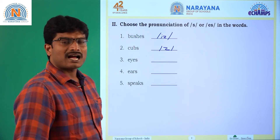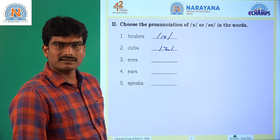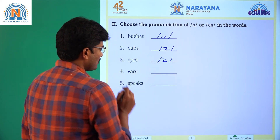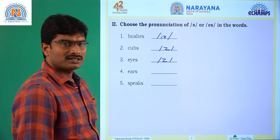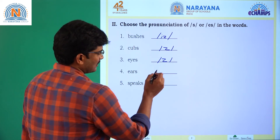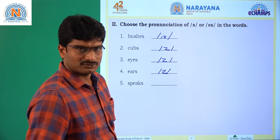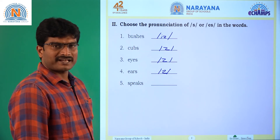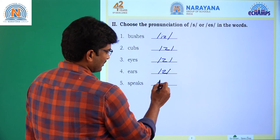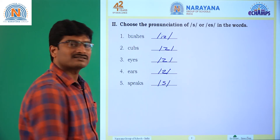Question number 3: 'eyes.' The sound is 'z' sound. Question number 4: 'ears.' The sound is 'z' sound. Question number 5: 'speaks.' Here the sound is 's' sound.